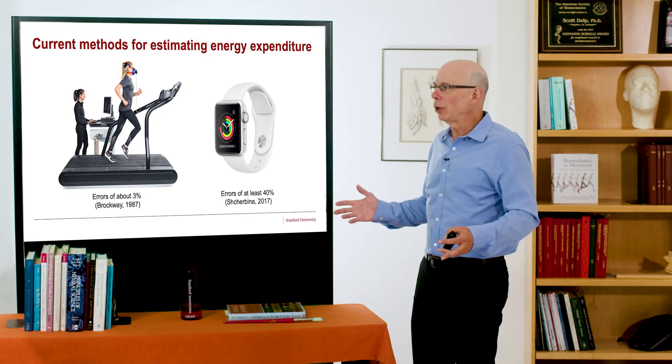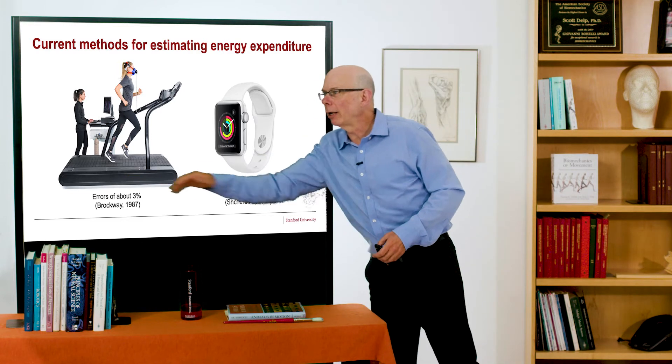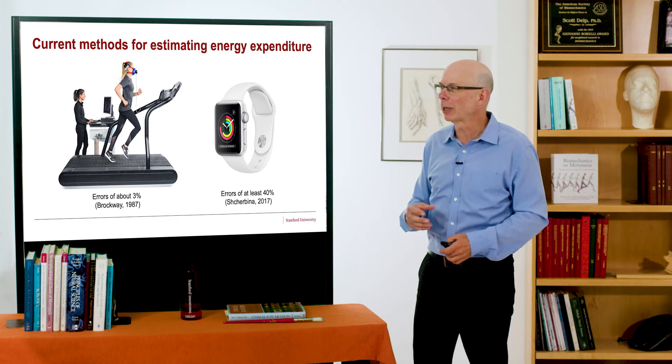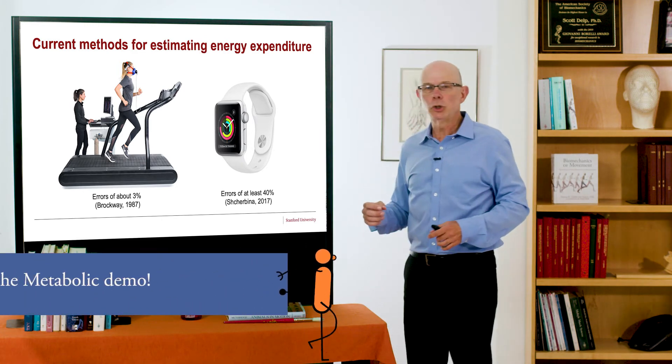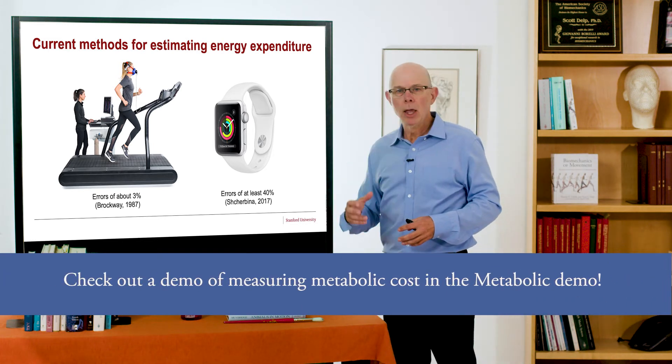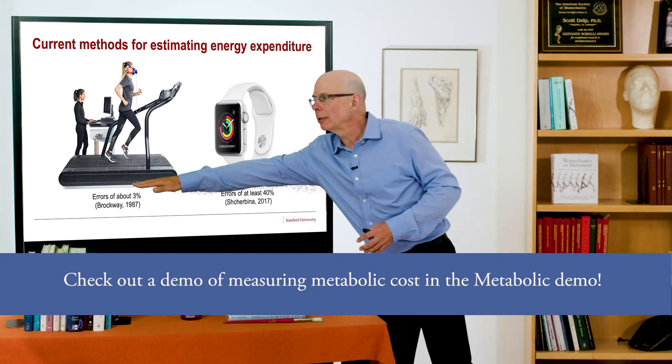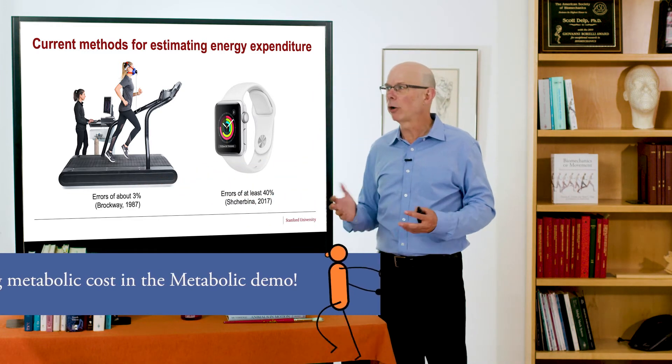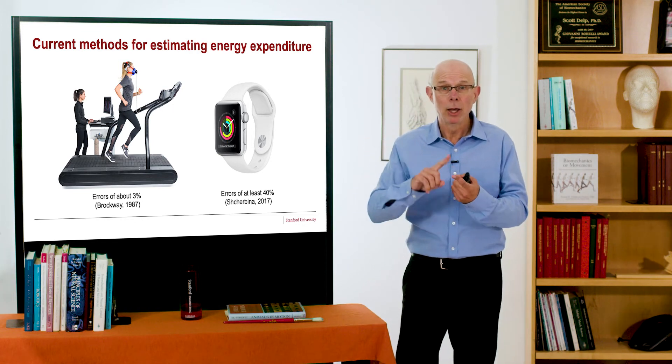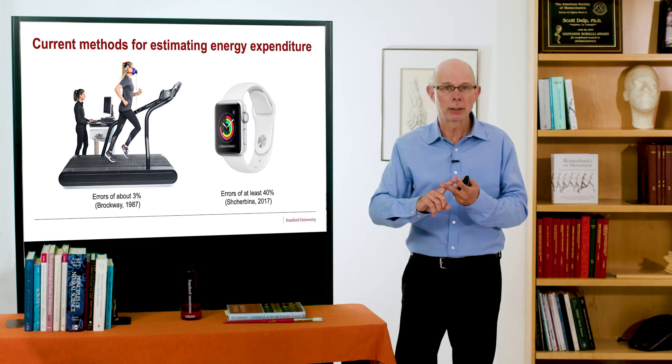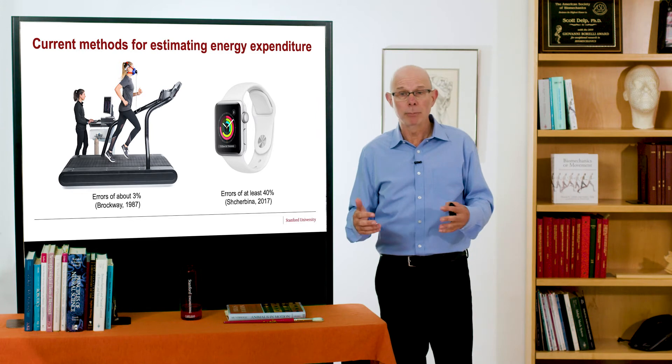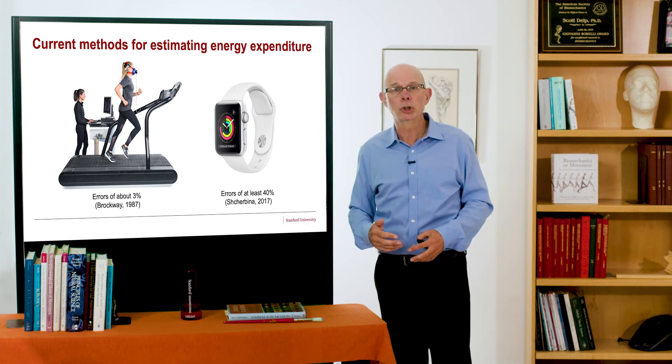Now we're motivated to do this because the current methods for estimating energy expenditure have limitations. The two basic ways we do it, almost everyone does this in a laboratory here. Here's my daughter, Stella, being subject to one of my many experiments, where we're measuring her metabolic cost. To do this, we need to be in a laboratory. She wears a gas mask, and over a six-minute period, we can estimate her energy expenditure with errors of roughly three percent. This is problematic. You have to come to the lab. You have to wait six minutes for a measurement, so you have to do the activity for six minutes. Much of our activity is actually done by moving around, not in six-minute bouts, but in much shorter bouts.